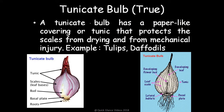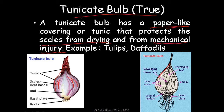A bulb can be divided into two types. First is the tunicated bulb, also called a true bulb. A tunicated bulb has a paper-like covering or tunic that protects the scales from drying. The outer papery covering protects the internal fleshy leaves from drying out and also provides mechanical protection. Examples include tulips and daffodils, where the outer papery tunic surrounds the inner developing leaves and flower bud.